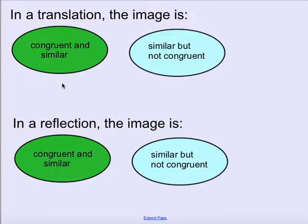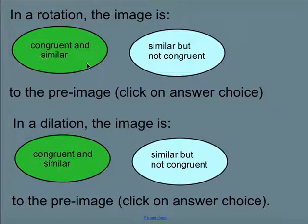Now let's think about each of these. In a translation, do we get something that is congruent and similar, or just similar but not congruent? Well, translation — we're just sliding, so it's going to stay congruent. We still have the same figure, it's just in a different place. Reflection is the same way — we flip it, and we have something congruent and similar, because we don't actually change the size. In a rotation, once again, we have a congruent and similar figure. But in a dilation, it's actually just similar, because we're changing the side lengths. The angles stay the same, which makes it similar, but it's no longer congruent.